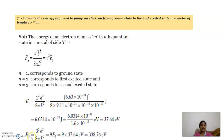For the second excited state, E3 equals 3 square h square by 8mL square, or 9 times E1. So 9 into E1 — multiplying 37.64 by 9, we get 338.76 electron volts.